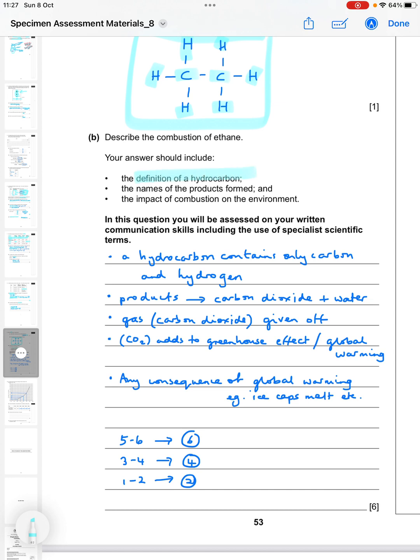Describe the combustion of ethane. Your answer should include the definition of a hydrocarbon, the names of the products formed, and the impact of combustion on the environment. In this question you'll be assessed on your written communication skills including the use of specialist scientific terms. The first part: definition of a hydrocarbon - a hydrocarbon contains only hydrogen and carbon.